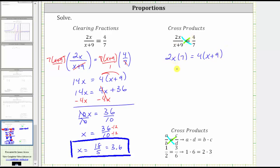2x times 7 is 14x, giving us 14x equals, on the right we distribute, and we have 4x plus 36.